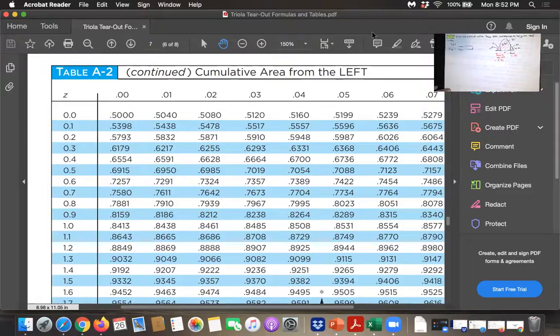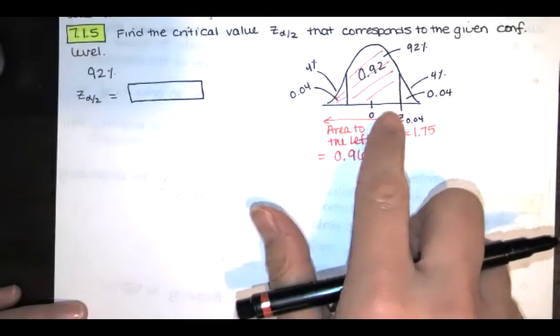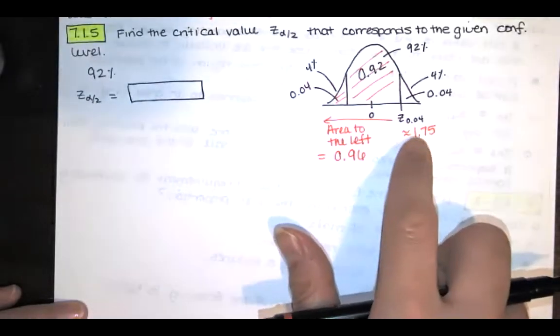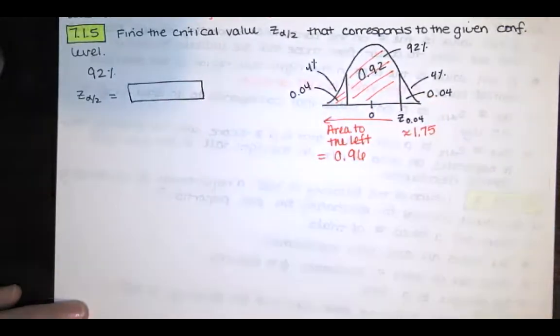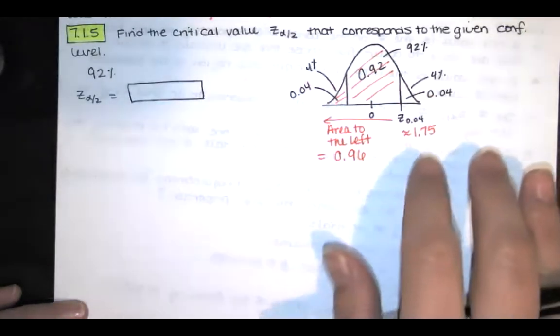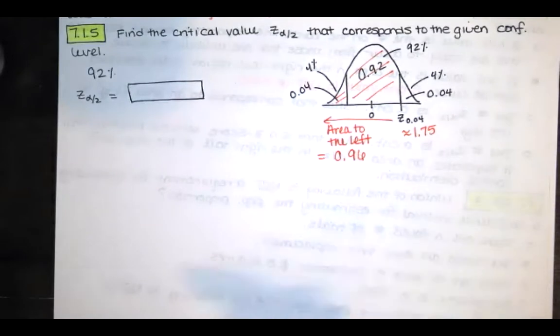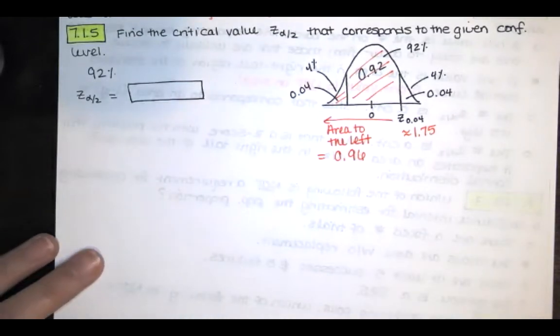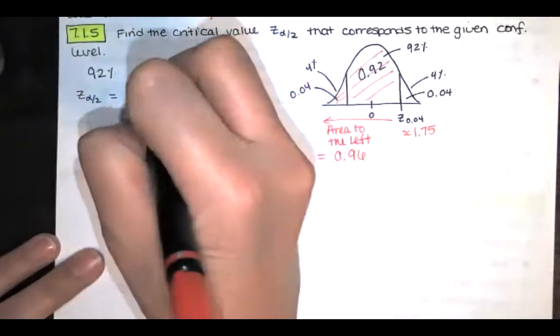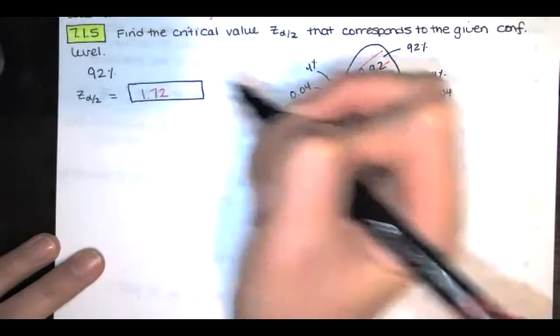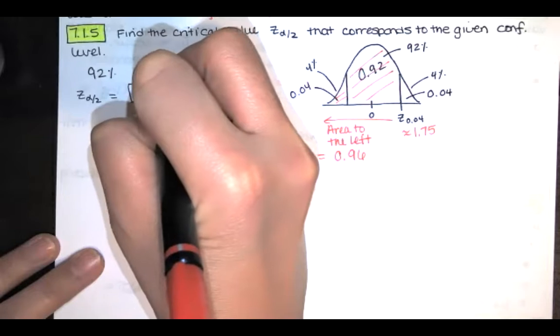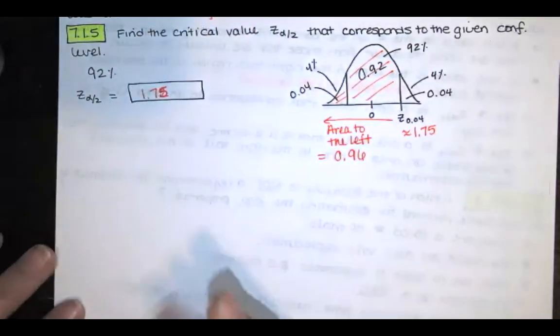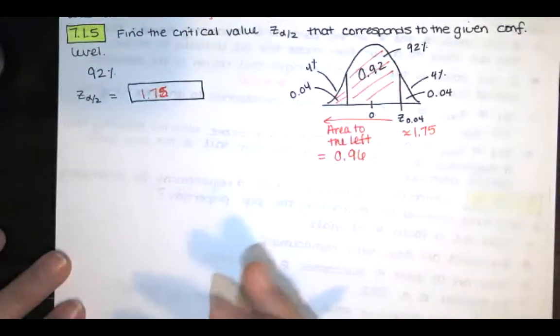So that z score that separates that top 4% from that bottom 96% is 1.75, or you're 1.75 standard deviations above the mean. So that's the answer that I would have here. I wrote 7.2, but I meant 7.5. So that's one way that you could do it using table A2. You could also use Excel for this.